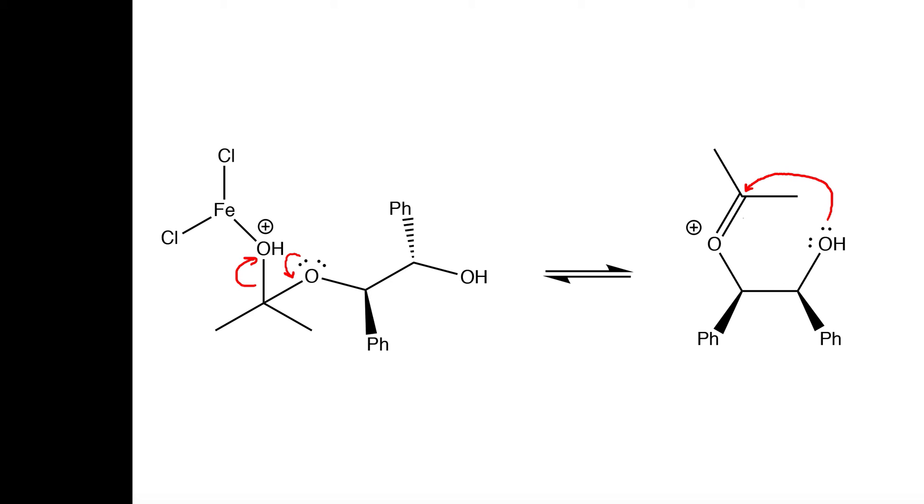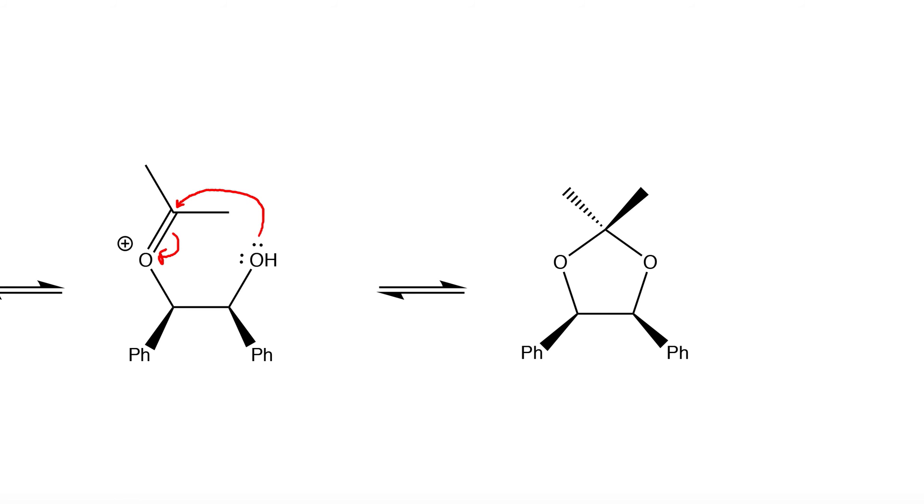This results in the cis-acetonide and the reason it's cis is because these phenyl groups, or you can conversely think that the hydrogens right here, are in the cis position.